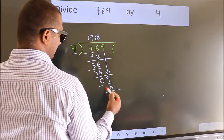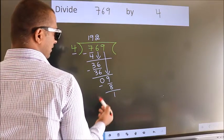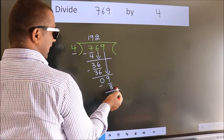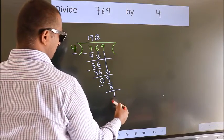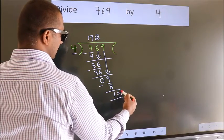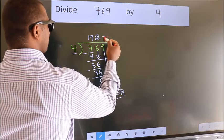Now we subtract. We get 1. No more numbers to bring down. So, we stop here. This is our remainder. This is our quotient.